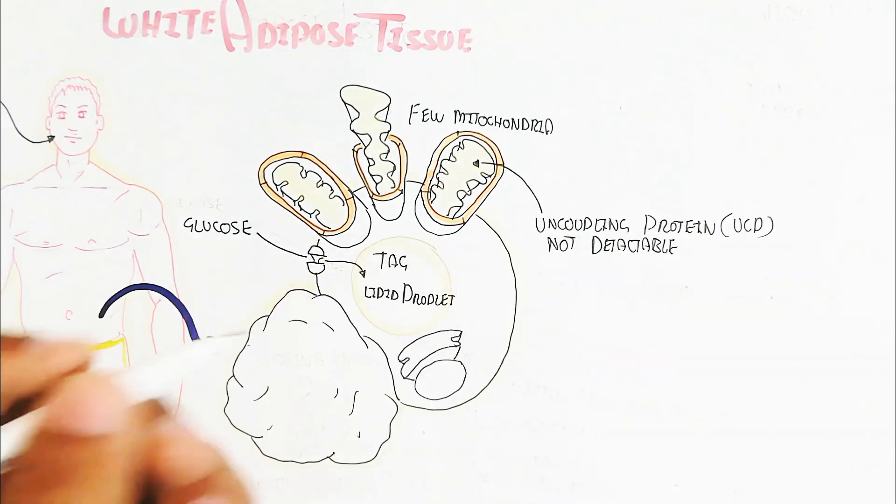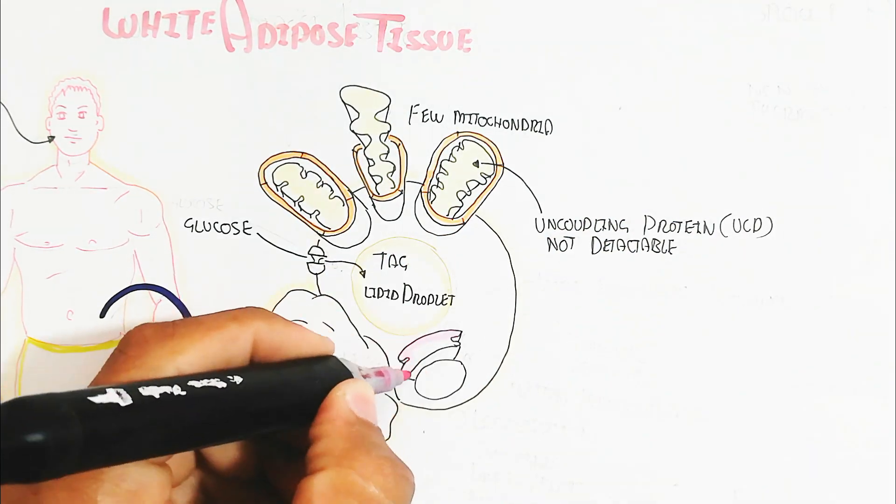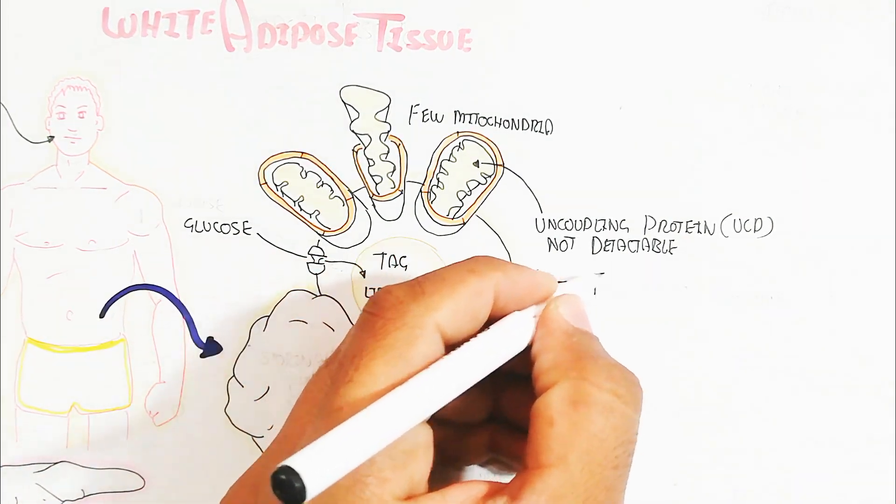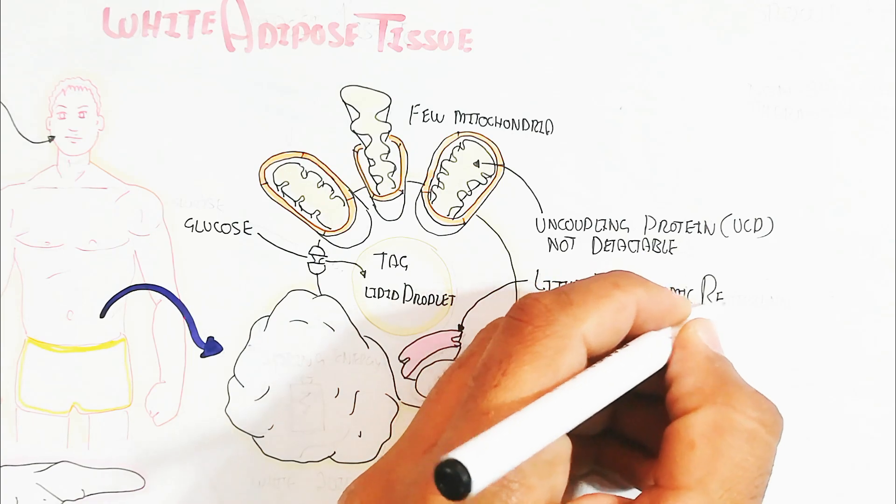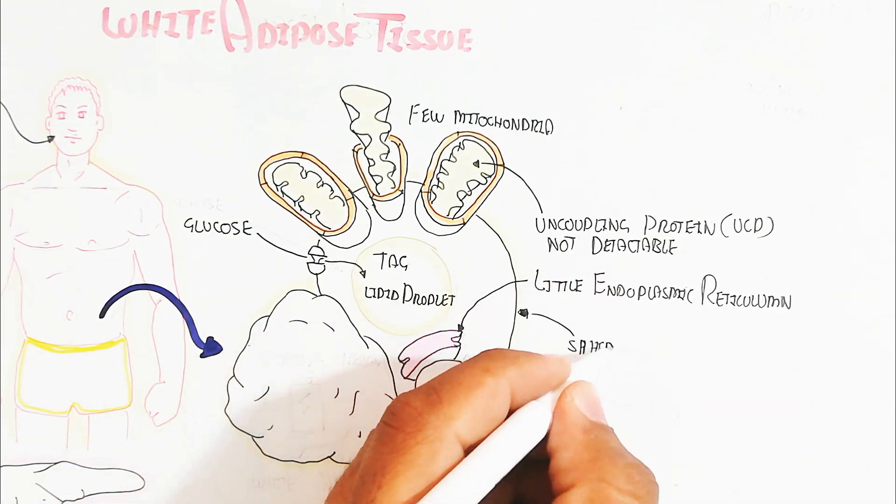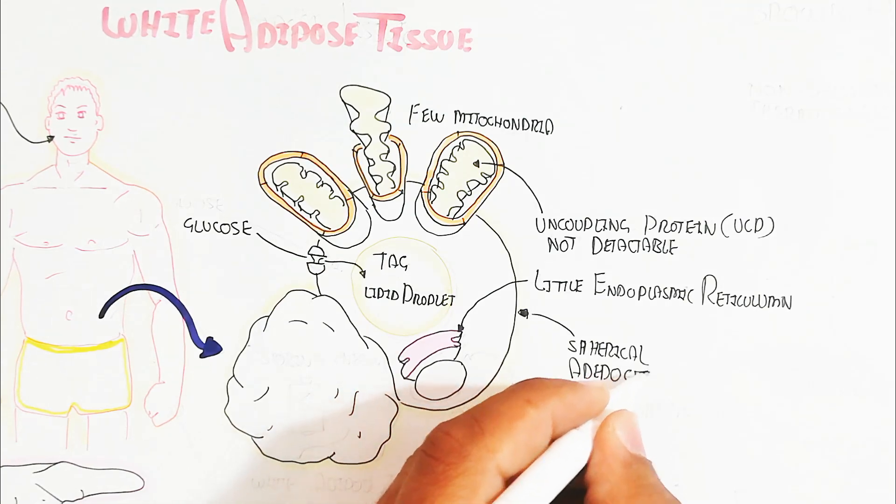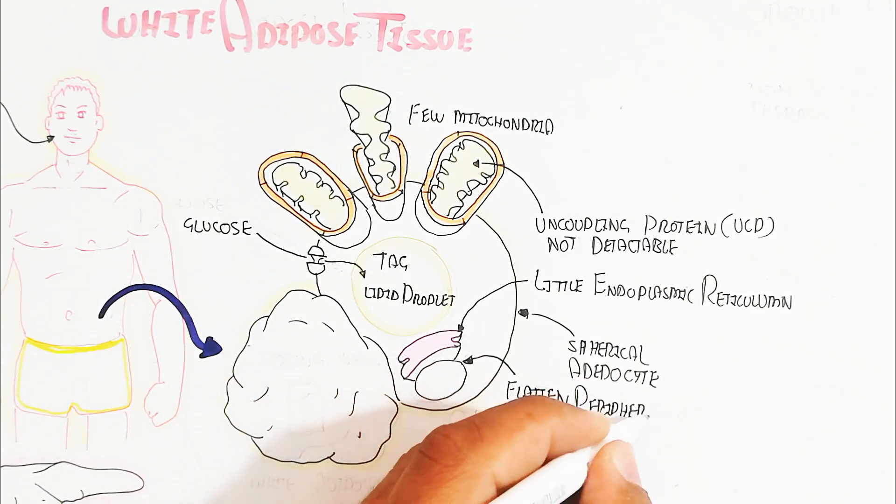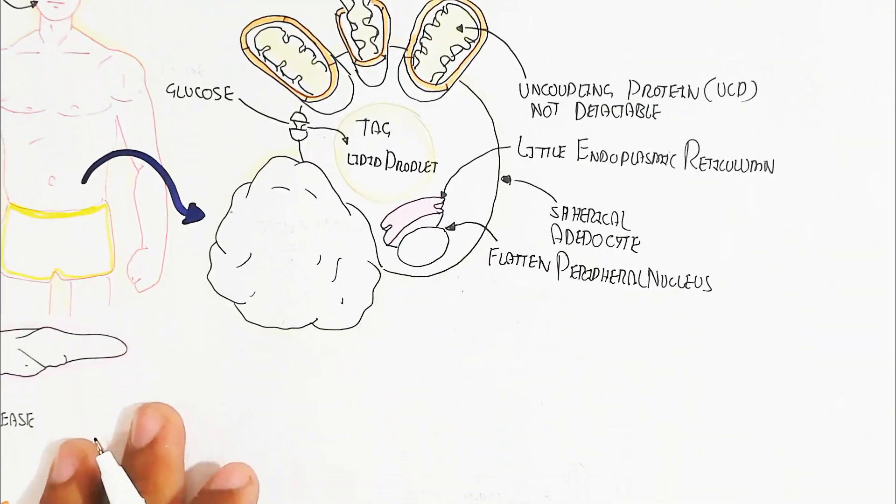Uncoupling protein UCP not detectable. And little endoplasmic reticulum are present. The localization of this adipose tissue is subcutaneous on the skin, below the skin, intra-abdominal, below the abdominal skin, and epicardial.